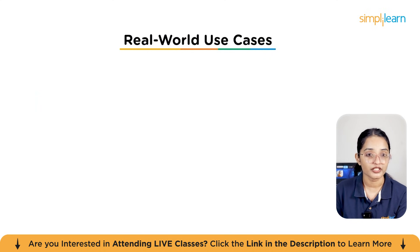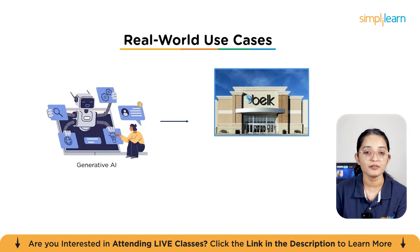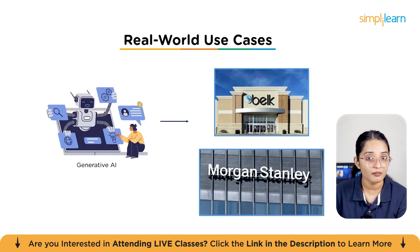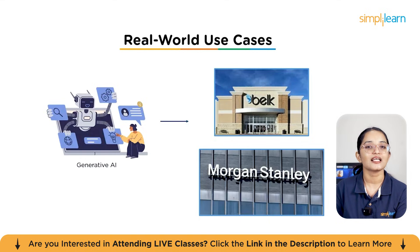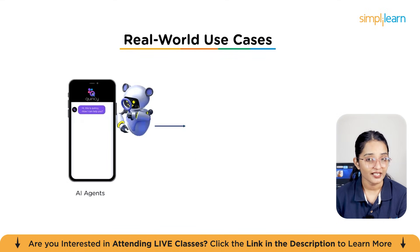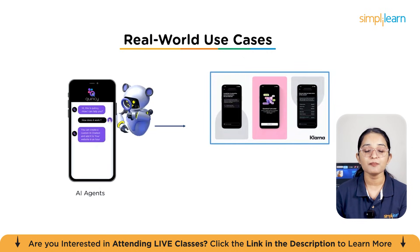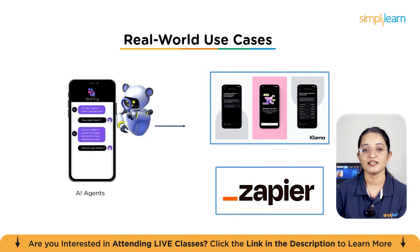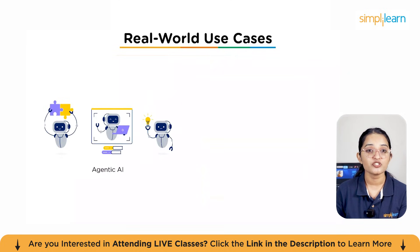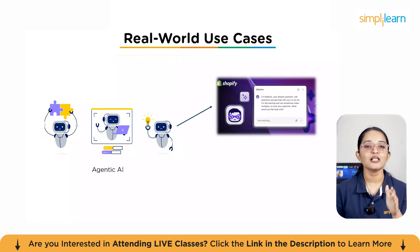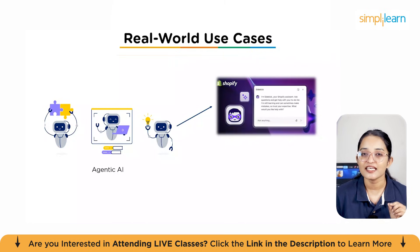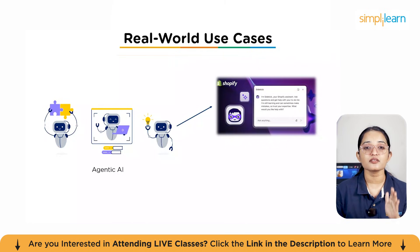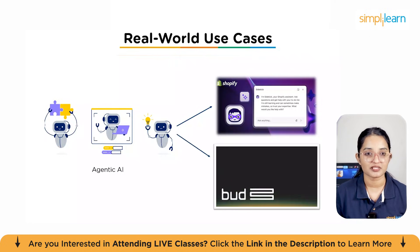Now let's talk about real-world use cases. Generative AI is already being used by big companies — for example, Belk uses it to automatically write product descriptions, while Morgan Stanley relies on it to generate research summaries for their analysts. For AI agents, you can see them in action with Klarna's customer support bot, which helps answer customer questions, and with Zapier, where agents move data between different apps automatically — great at handling repetitive tasks reliably. Then there's agentic AI: Shopify Sidekick helps store owners manage their shop by planning and taking actions, while Bud Financial uses it for automating money transfers and financial decisions.